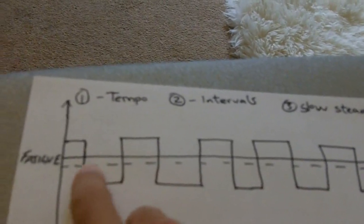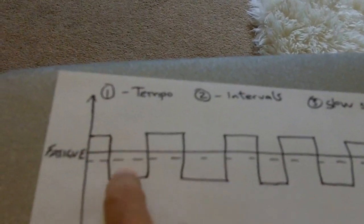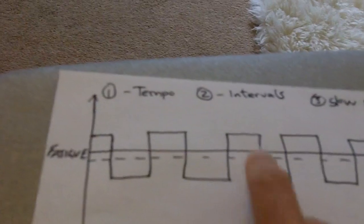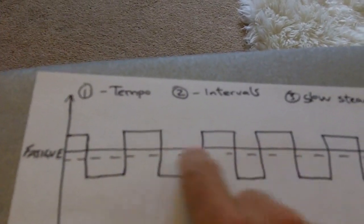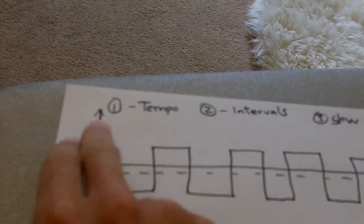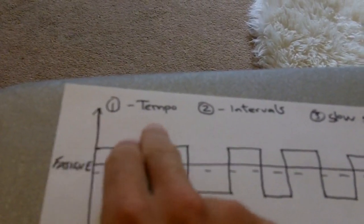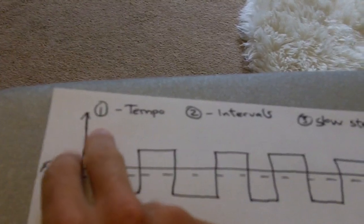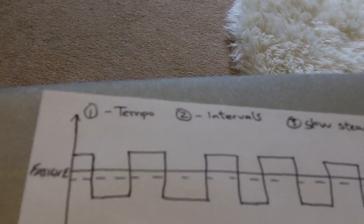Now, by doing both of these sessions, both the interval type session and the tempo run around this point of fatigue, over time this point of fatigue will move up to here. So therefore you can go faster for longer. Simple as that.